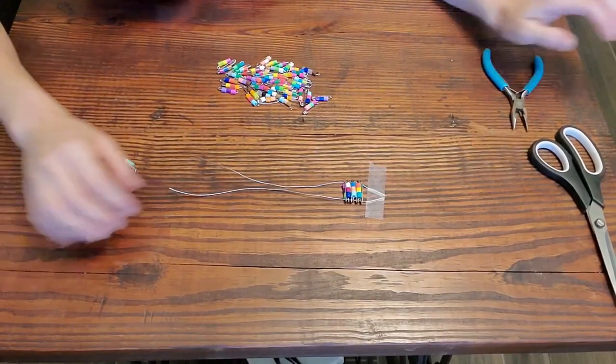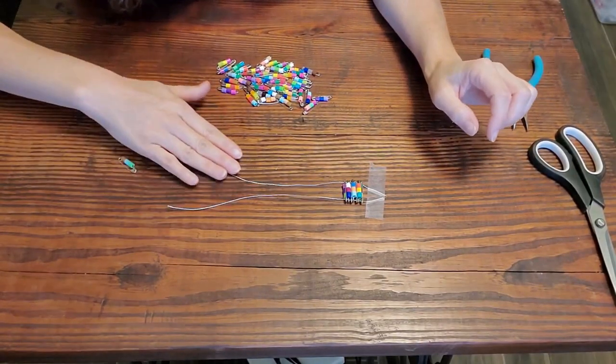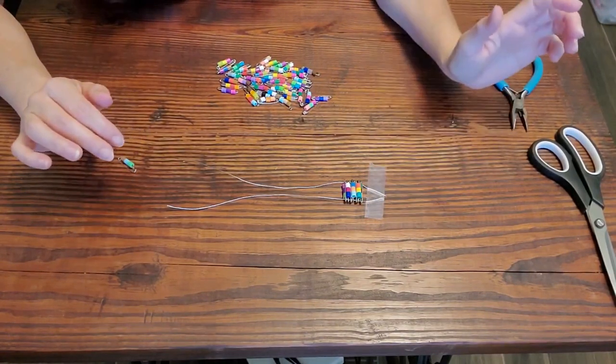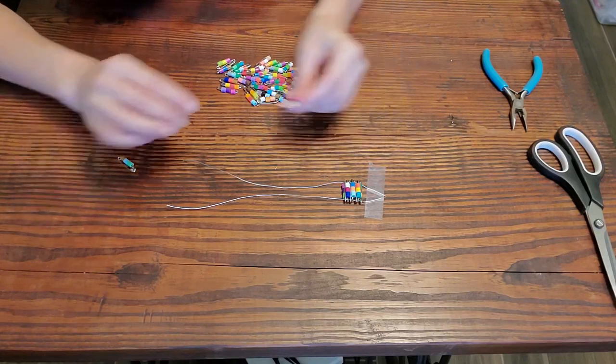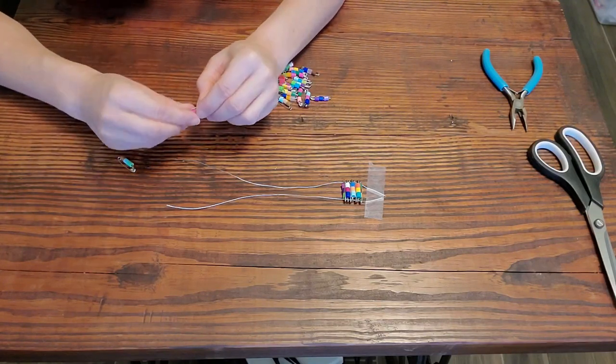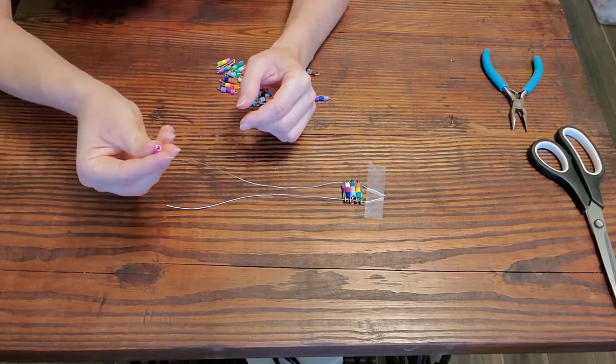Alright, so here I have some of my pattern going, and what I figured out is I've decided to tape mine down. It does work better. So when I string through the easy hole at the bottom of the safety pin, I make sure that I put those beads down.